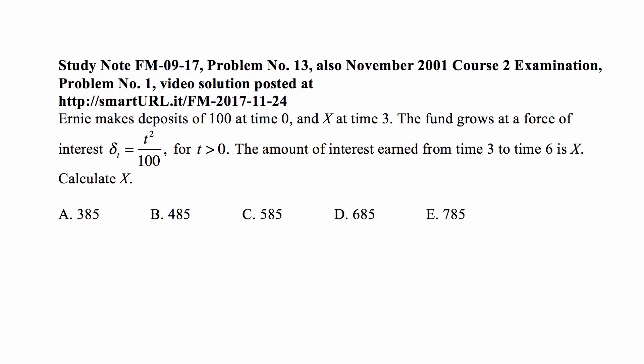Here's the problem for today for exam FM. Ernie makes deposits of 100 at time 0 and x at time 3. The fund grows at a force of interest delta sub t equal to t squared over 100 for t greater than 0.